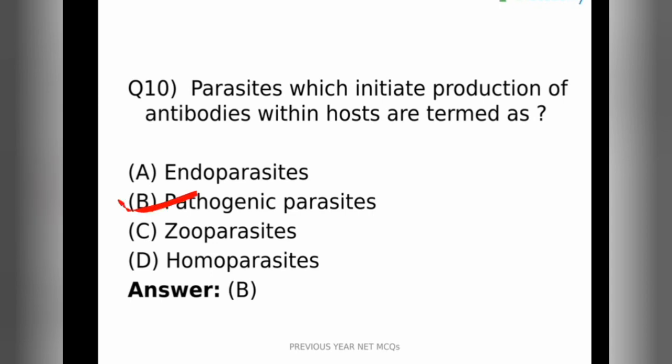So parasites which are initiating the production of antibodies within the host are called pathogenic parasites because they are the pathogens which will cause certain diseases in the host body by producing antibodies and fighting with the antigens of the host body. So here we come to an end of 50 questions in our season 2 of MCQ series.